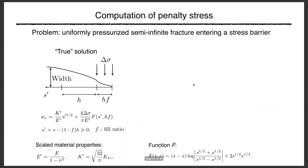To compute the penalty stress, we use the problem of a uniformly pressurized semi-infinite fracture, with a stress barrier added for generality. The element size is h, and the fill ratio f ranges from 0 (just entering the element) to 1 (about to exit). Luckily there's an analytic solution for the width near the tip — a known but complicated function.